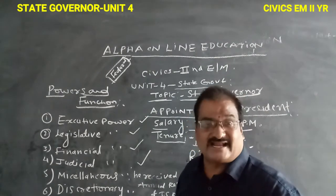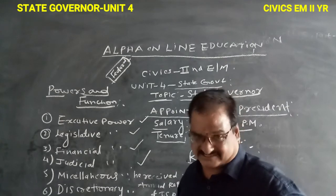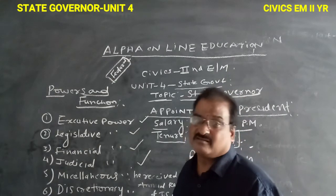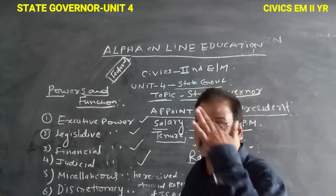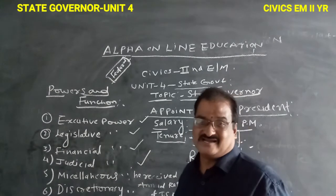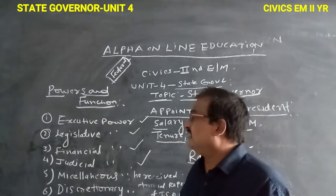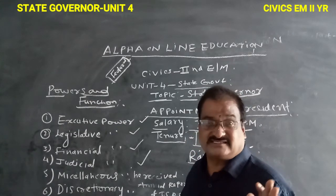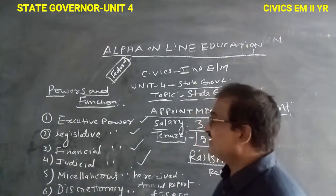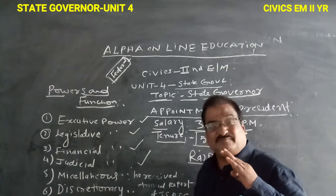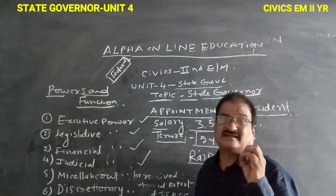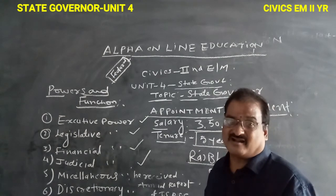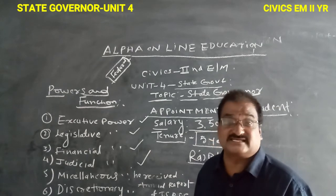The first is executive power. The Governor appoints the Chief Minister. After general elections, whichever party gets an absolute majority in the Vidhan Sabha, that party's leader is appointed as Chief Minister by the Governor. The Governor also appoints the ministers of the state.